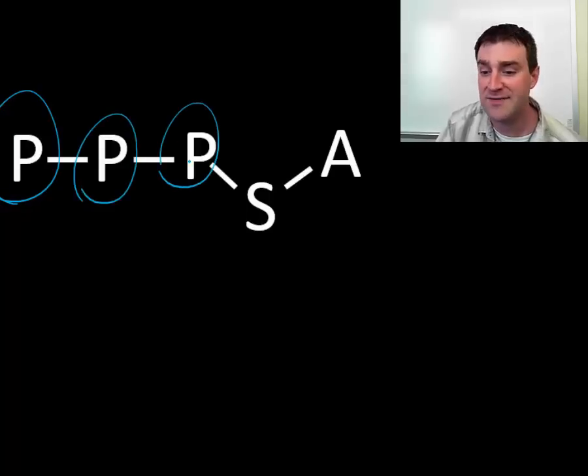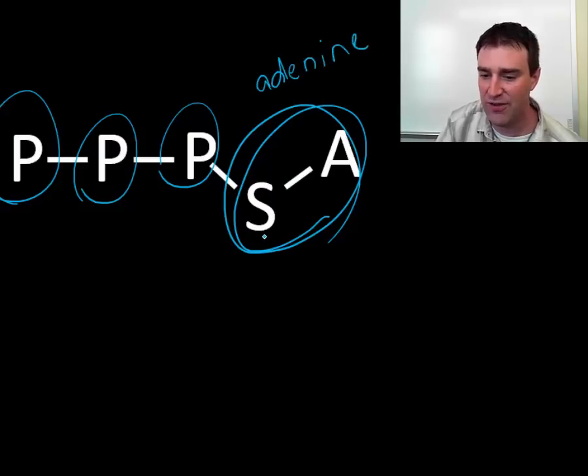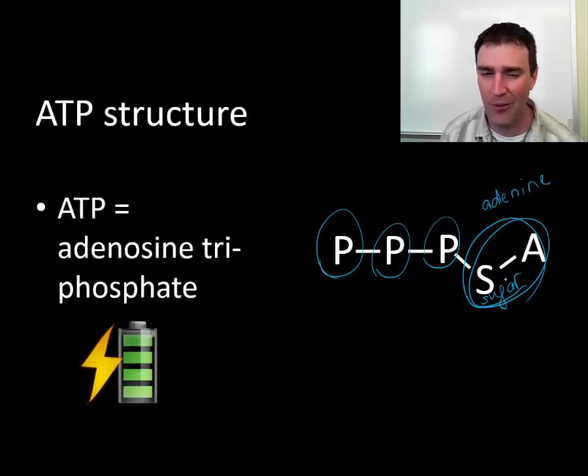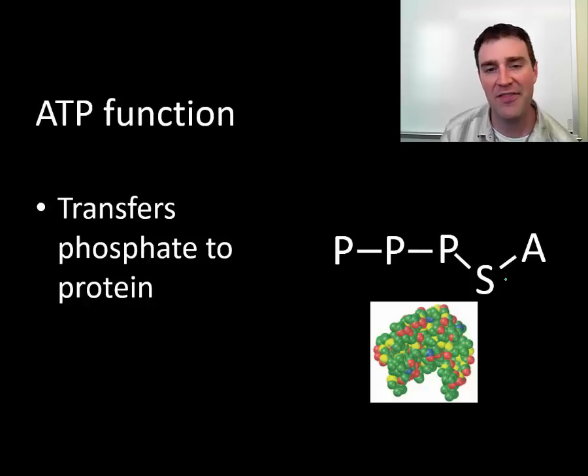So we have 3 phosphates attached to the adenosine. As it turns out, the adenosine is an adenine nitrogen base combined with the sugar that it is usually attached to in nucleic acids. So I'm not worried about adenosine at all. That's not the functional part of the molecule. But I do want you to think of ATP as being like a fully charged battery. It is ready to go with 3 phosphates attached. It's ready to deliver energy to molecules that need it.